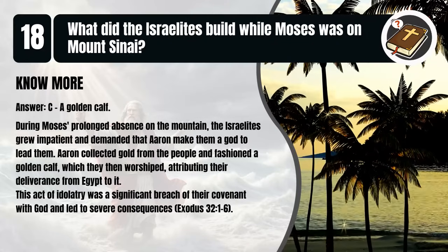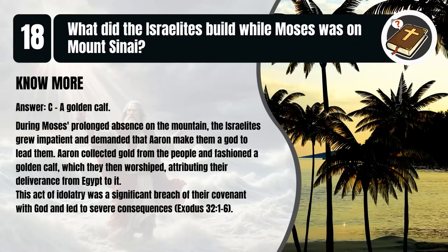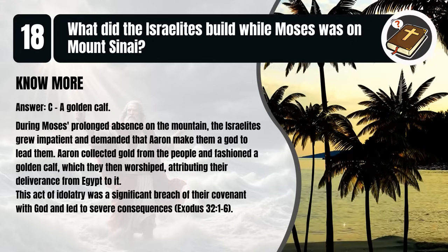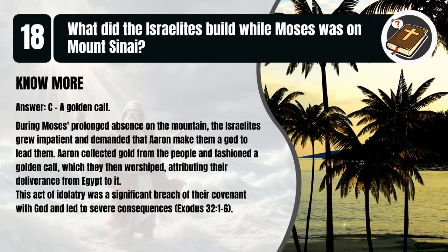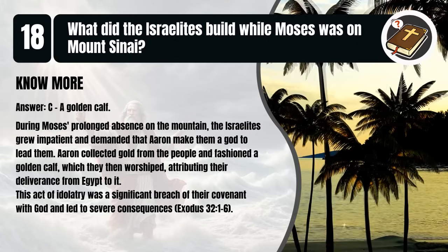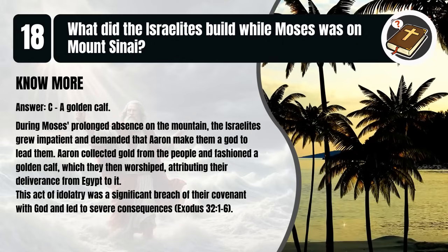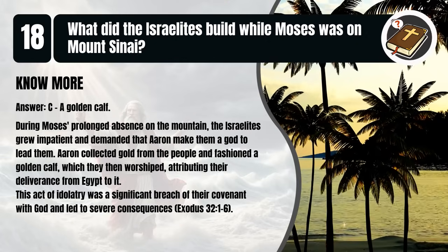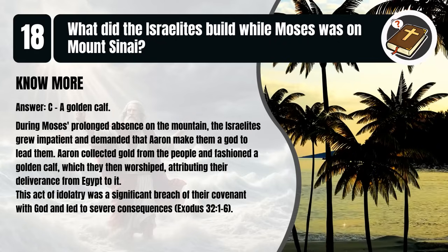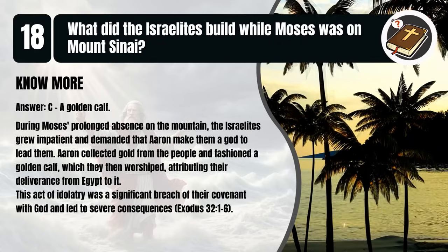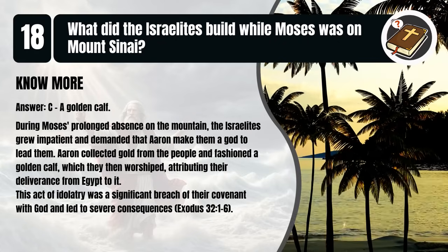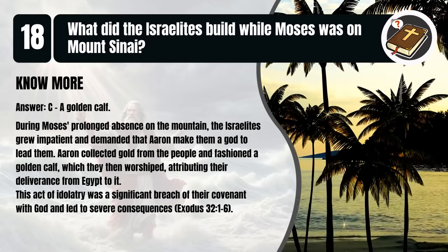That's C. A golden calf. During Moses' prolonged absence on the mountain, the Israelites grew impatient and demanded that Aaron make them a god to lead them. Aaron collected gold from the people and fashioned a golden calf, which they then worshipped, attributing their deliverance from Egypt to it. This act of idolatry was a significant breach of their covenant with God and led to severe consequences. Exodus 32:1-6.